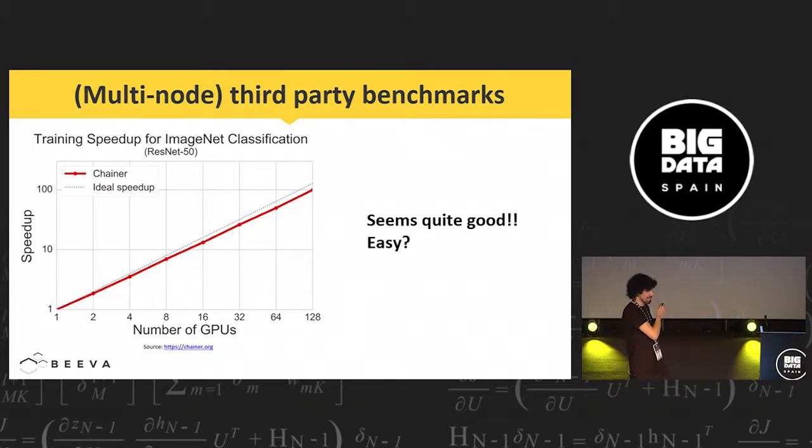This is an external benchmark from Chainer, Chainer.org. Chainer is a framework, an open source framework for deep learning like others, TensorFlow, MXNet. Chainer is interesting because it's especially focused on efficiency and scalability. When I first saw this figure, I said, wow, with more than 100 GPUs, and they practically fit the ideal speedup. So it's like panacea, really seems quite good. It's actually so easy.